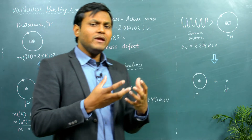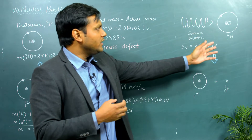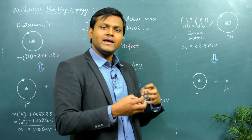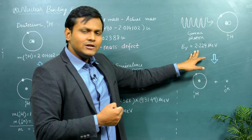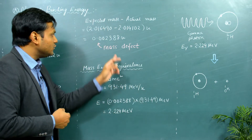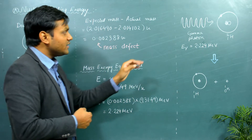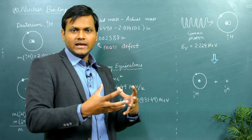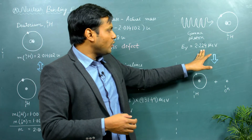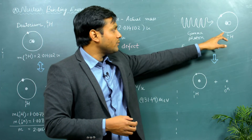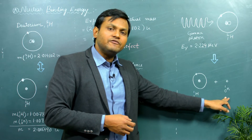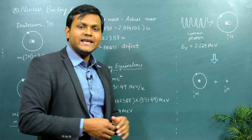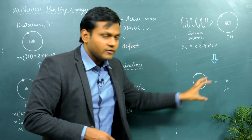To test that hypothesis, we can bombard a deuterium nucleus with a gamma photon having energy of 2.224 mega electron volts. If the gamma photon has energy less than 2.224 mega electron volts — corresponding to the mass defect energy — nothing is going to happen; the deuterium atom will stay the same. However, if the energy equals 2.224 mega electron volts, the deuterium atom will break apart into a hydrogen atom and a free neutron. If the energy is greater than this, the excess energy will be given off as kinetic energy of the daughter particles.